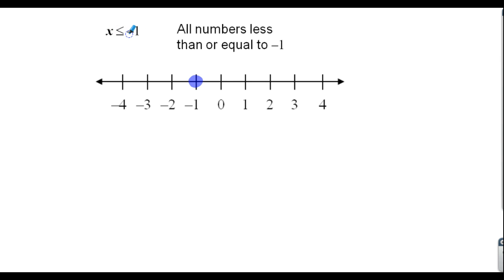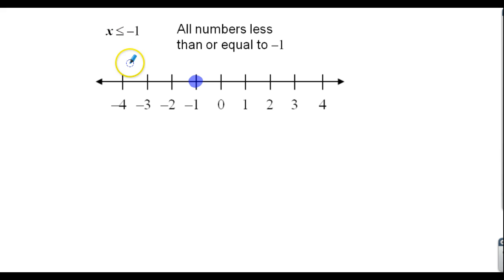Let's look over here: is zero less than negative one? It's actually not. Is one less than negative one? No, that's not true. What about negative two — is negative two less than negative one? It is. So it's all numbers going that way. My suggestion would be to always pick a couple of numbers on either side — a positive and a negative — and test to see if it works.